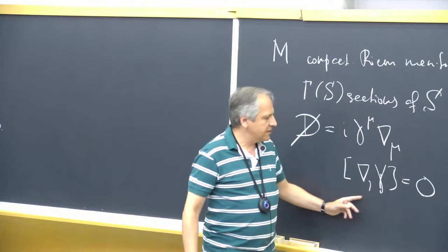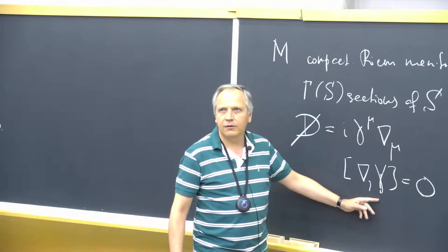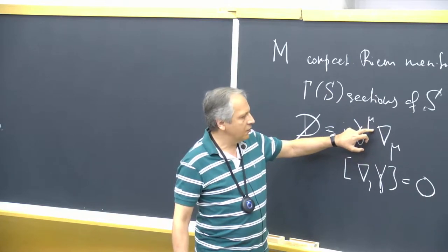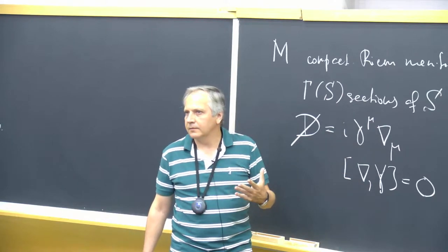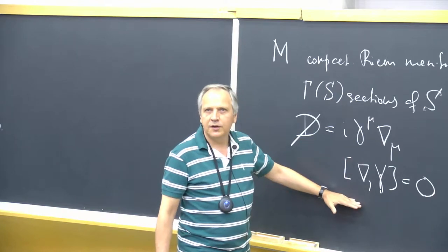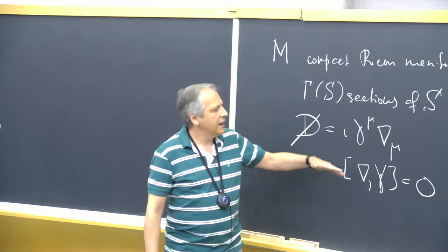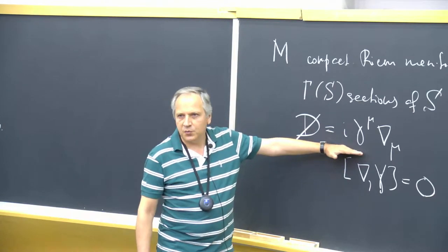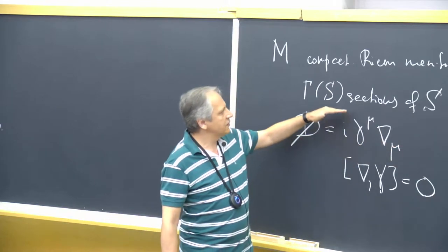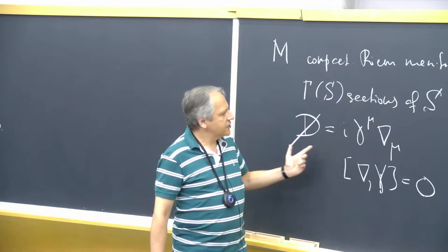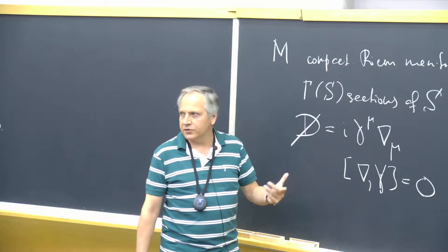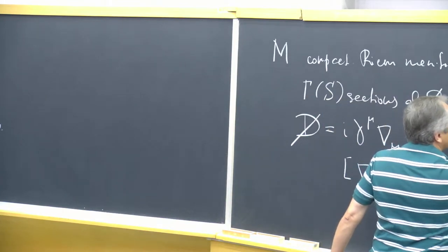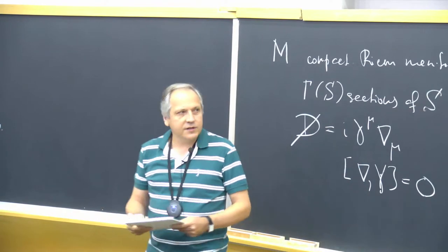In physics, we are used to more general Dirac-type operators where you can also put a mass, a potential, or interaction with a Higgs field. All that can be done in principle for some of the theorems, but not for all. The objects acted on by D have both spinor indices and internal symmetry indices from a gauge group — whatever gauge group you like. The sections can also be, for example, differential forms, in which case the Dirac operator is what is called the Hodge-Dirac operator. The dimension of the manifold I will call n, and I will mostly suppose that it is even.